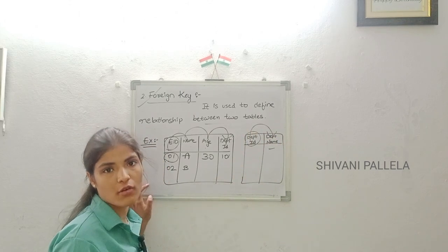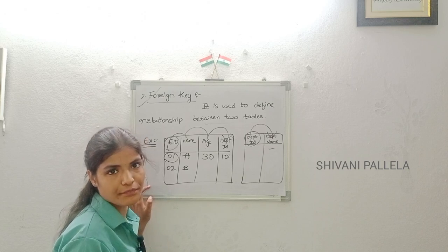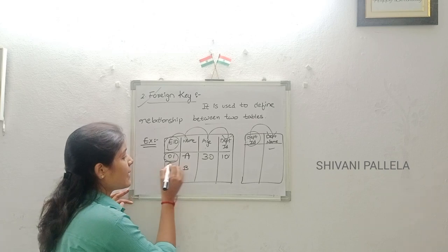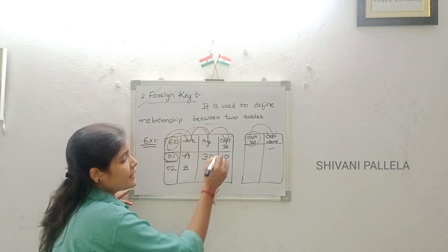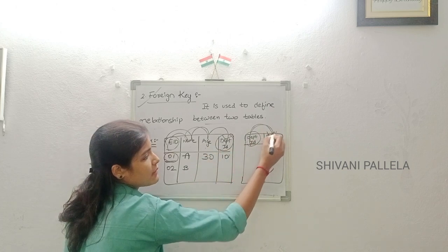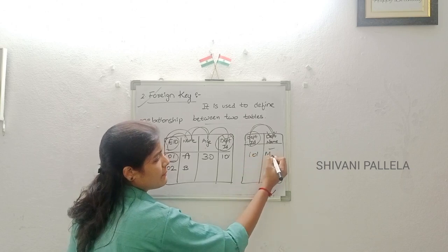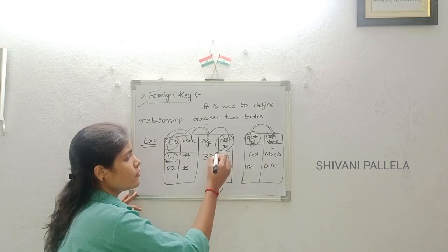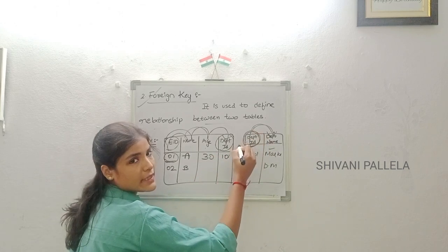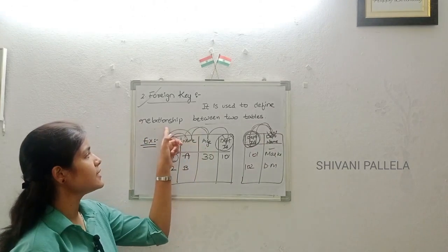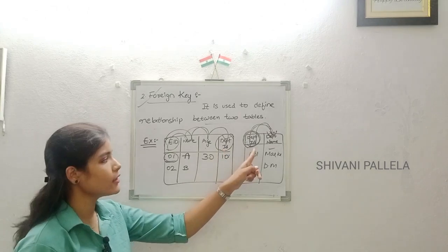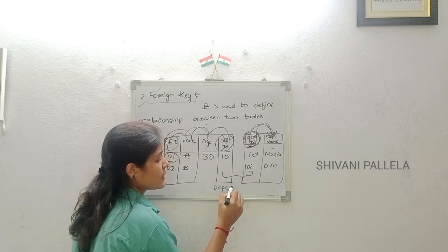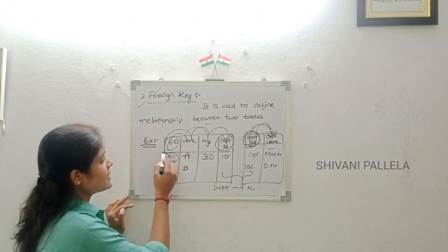If I enter the department ID, I will get which department the employee is working in — for example, department ID 101 is marketing, 102 is digital marketing. So we are using a relationship between two tables through the shared department ID column. This department ID is the foreign key, and employee ID is the primary key.